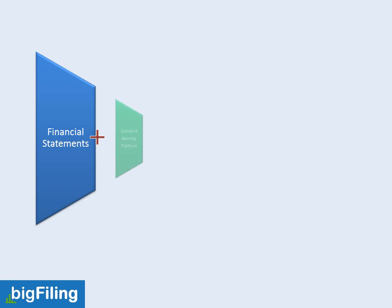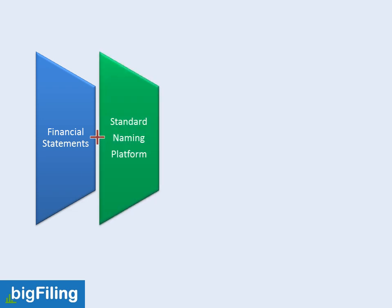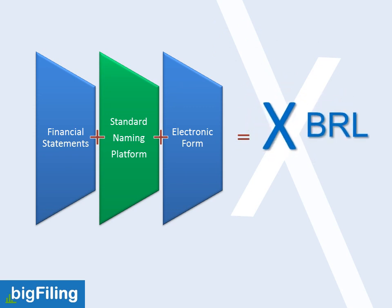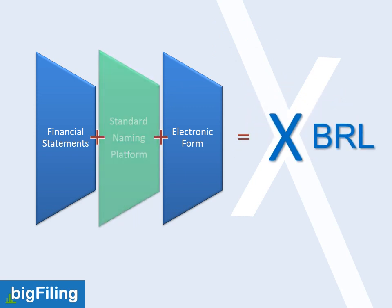Components of XBRL. First is your financial statements. Then we need a standard naming platform and electronic format for these financials. The component which plays a major role is the standard naming platform. We will discuss this in detail using various examples under both scenarios — that is before XBRL and after XBRL — and then analyze these differences.